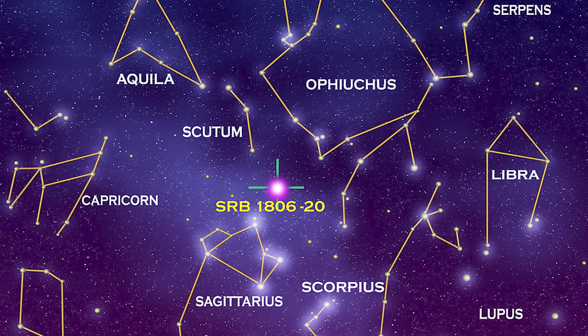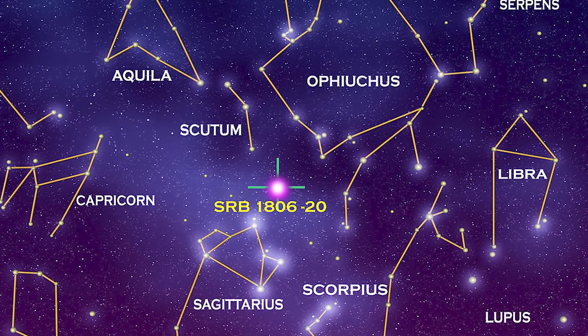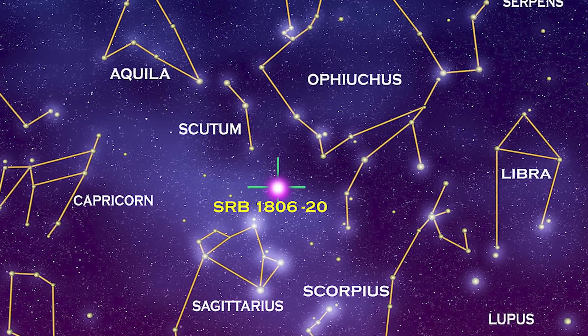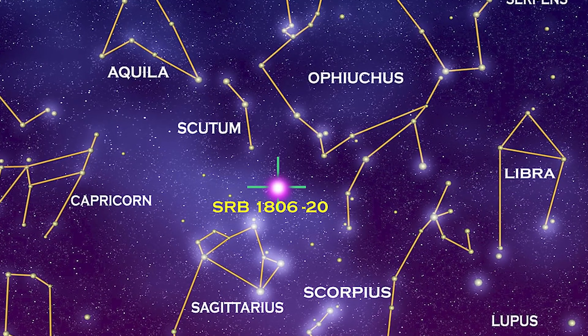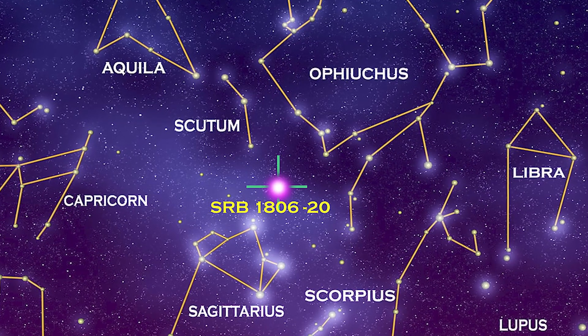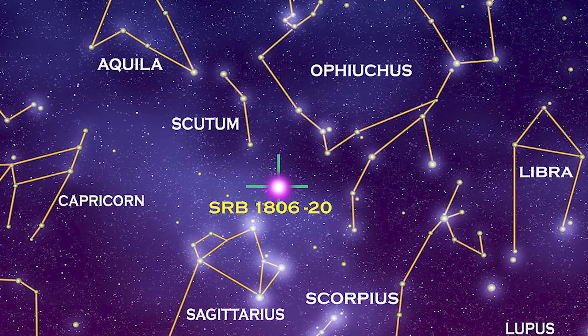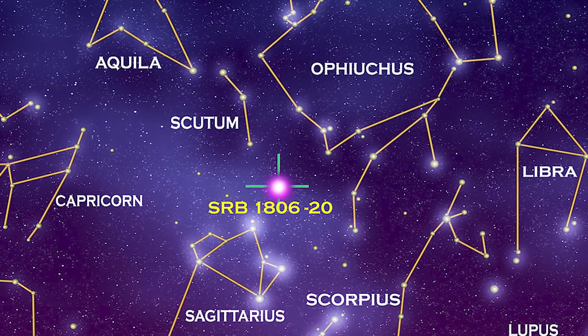There was also SGR 180620, a magnetar 50,000 light years away, that emitted a burst in 2004 that released the same amount of energy in one-tenth of a second that the Sun has produced in 150,000 years, temporarily expanding the Earth's ionosphere and compressing its magnetic field.